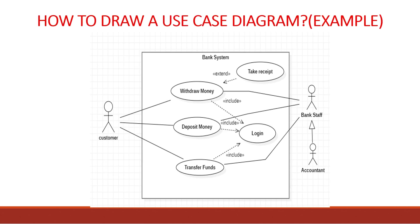Now we will learn about use case diagrams through an example — a banking system. There is a name of the system, 'Bank System', written on the top of the system boundary. There are three main use cases: withdraw money, deposit money, and transfer money. All three are joined to an actor — the customer — through an association line.